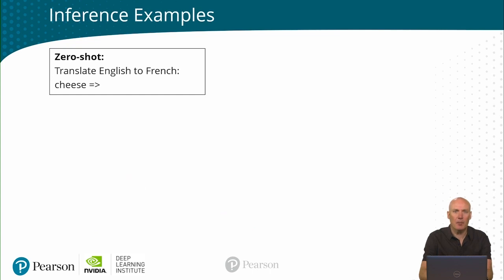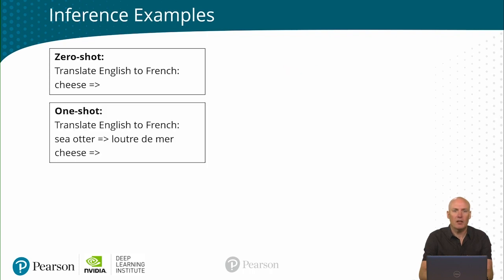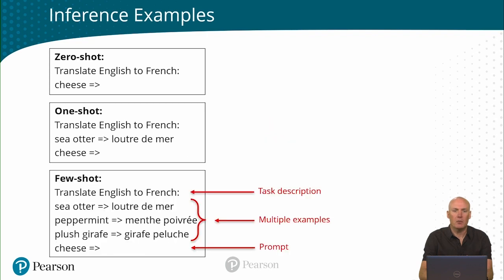Let's now look at some examples of how to use in-context learning. This is the type of learning done at inference time. We'll start with zero-shot learning: simply a task description and then a prompt. Here we say translate from English to French, and then we say the word cheese, and we want the model to translate this. For one-shot learning, we would have a task description, one example, and then the prompt. And for few-shot learning, we would have the task description, followed by multiple examples, and then the prompt of what we want to translate.